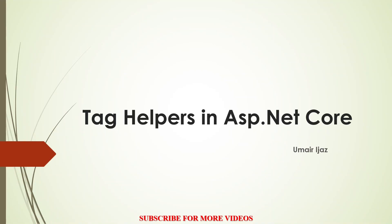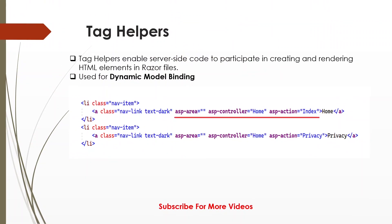Next we have tag helpers in ASP.NET Core. Tag helpers enable server-side code to participate in creating and rendering HTML elements in Razor files. Razor files are your views, and in those views we use tag helpers to enable server-side code within HTML elements. If we want dynamic model binding we can use tag helpers — we will study about that in later videos. As you can see, we have asp-area, asp-controller, asp-action in an anchor tag. This link is basically targeting the Home controller Index action instead of using href.